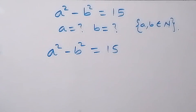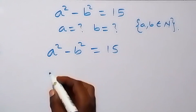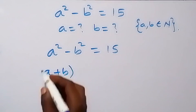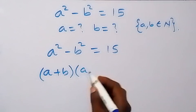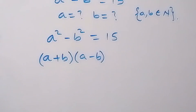From here, this follows the difference of two squares, and we can write it as a plus b multiplied by a minus b, and from here this equals 15.